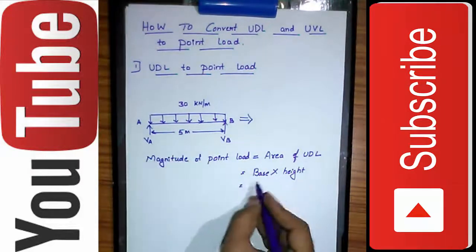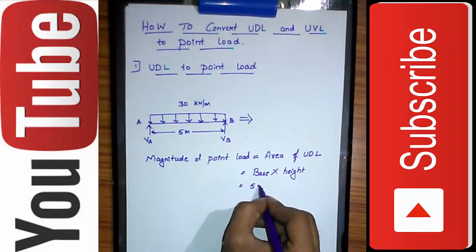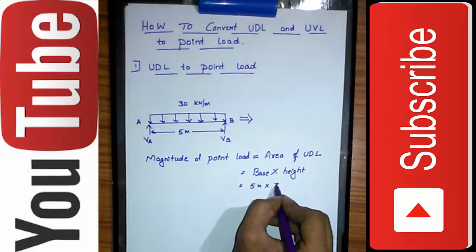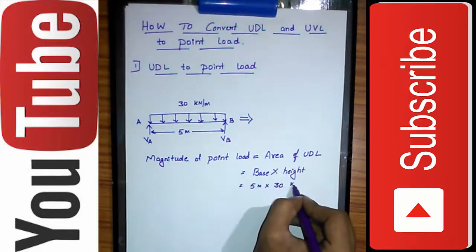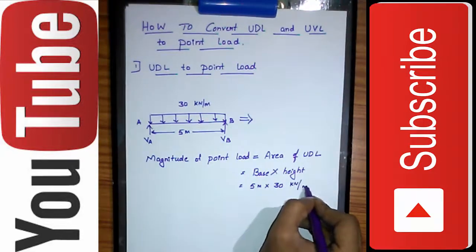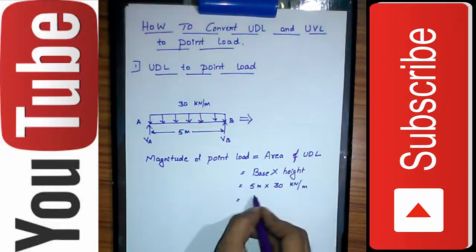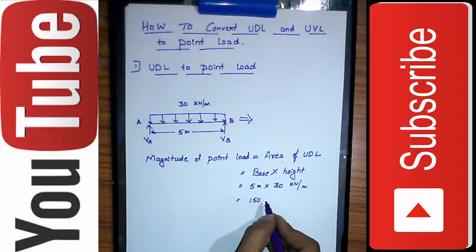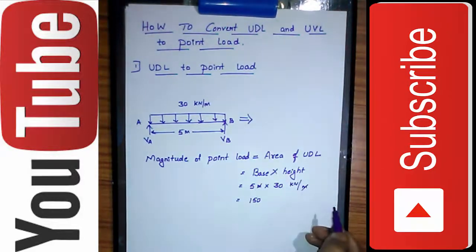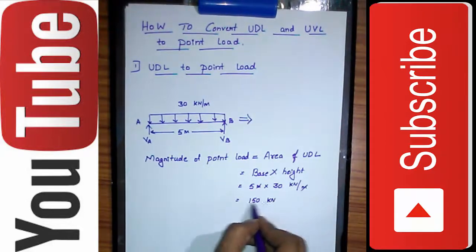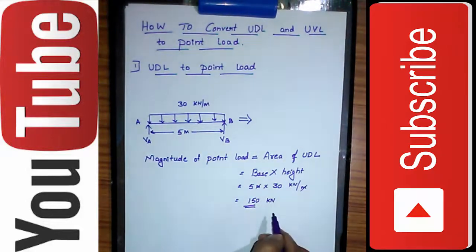The base is 5 meters and the height is the intensity, 30 kN per meter. So 5 multiplied by 30 equals 150. The meter units cancel, leaving only kN — therefore 150 kN is the magnitude of the point load.